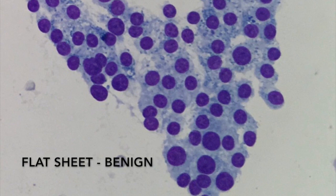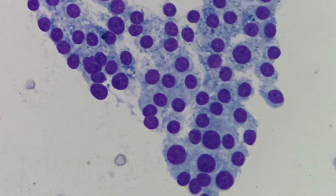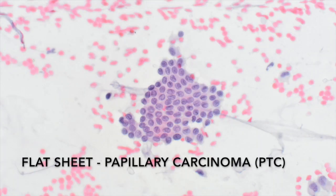Generally, thyroid FNAs show flat, regular sheets, which are usually signs of macrofollicular architecture. This is what you'll mostly find in benign thyroid nodules. Sometimes these sheets will have a stretched-out appearance, as in this example of cyst lining cells. Flat sheets can also be found in carcinomas, as in this case of a papillary thyroid carcinoma.